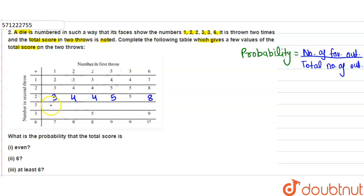Now 3 plus 1 is equal to 4, 3 plus 2 is 5, 3 plus 2 is 5, 3 plus 3 is equal to 6, 3 plus 3 is equal to 6, and 3 plus 6 is equal to 9.